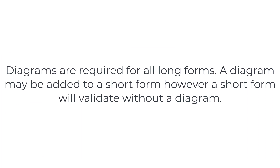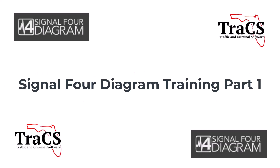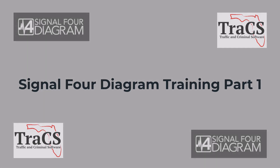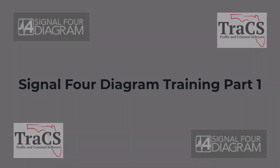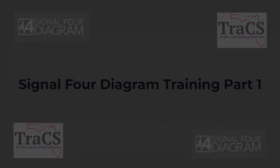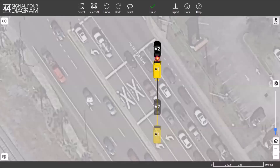You will also notice on the far left where the Form Detail section is, there is one called Signal 4 Diagram. If you click on that, it will take you directly to the same field, and you will click on the Diagram Tool. A diagram may be added to a short form; however, a short form will validate without a diagram. To provide further information on how to use the Signal 4 Diagram Tool, here is the Signal 4 Team to explain.